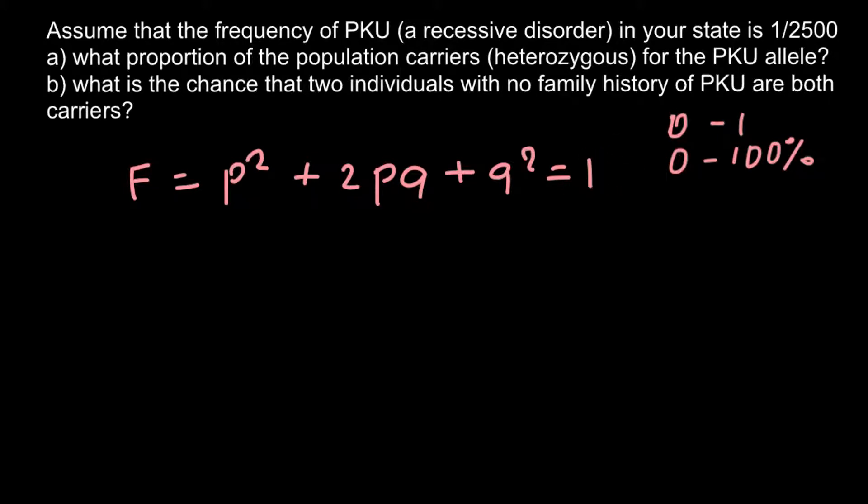So what does p² stand for? This stands for the homozygous dominant condition. 2pq stands for the heterozygous condition. And q² stands for the homozygous recessive condition. So as you see, we have only alleles P and Q, so all the alleles P plus all the alleles Q would equal to 1.